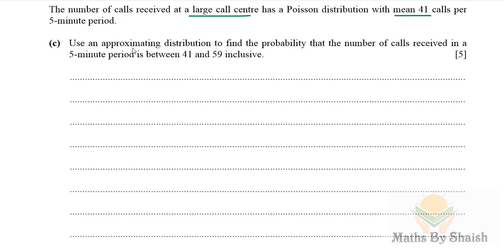Use an approximating distribution to find the probability that the number of calls received in a five minute period is between 41 and 59 inclusive, which means we are going to include 59 but not 41.